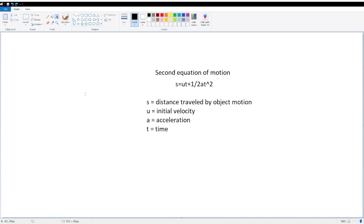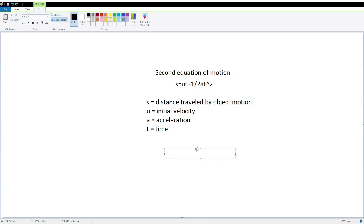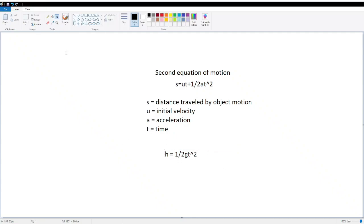To do this, we go to the second equation of motion: s equals ut plus one-half a times t squared, where s is the distance traveled by the object in motion, u is the initial velocity, a is the acceleration, and t is the time it takes to travel. How does this relate to our acceleration due to gravity? We can rewrite this as h equals one-half g times t squared.